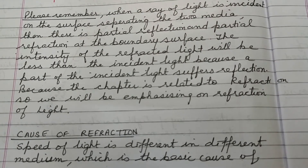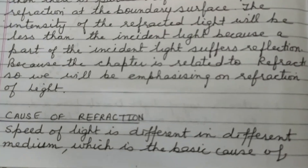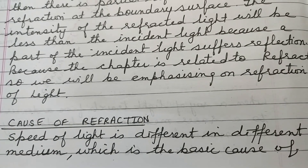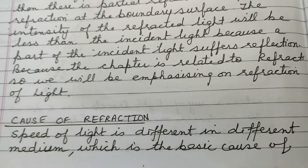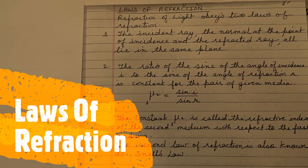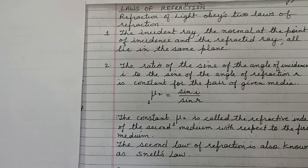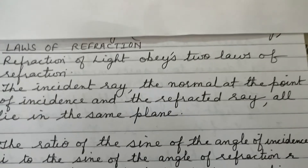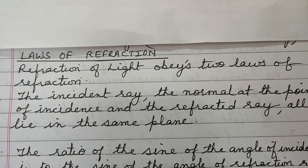The question arises: what is the cause of refraction? You have to remember that the speed of light is different in different mediums, and this is the basic cause of refraction of light. Now we will study the laws of refraction. Refraction of light obeys mainly two laws. According to the first law, the incident ray, the normal at the point of incidence, and the refracted ray all lie on the same plane.